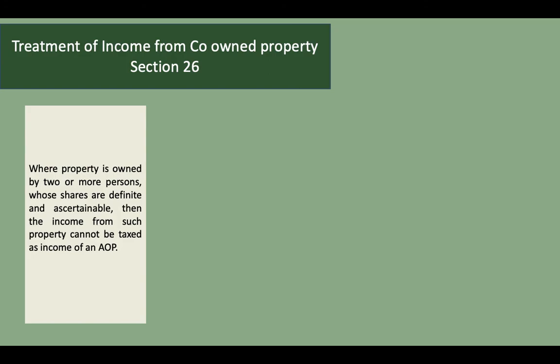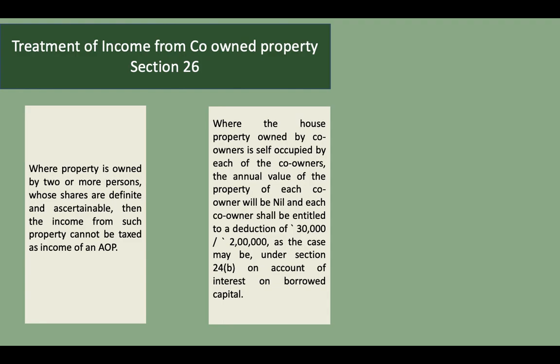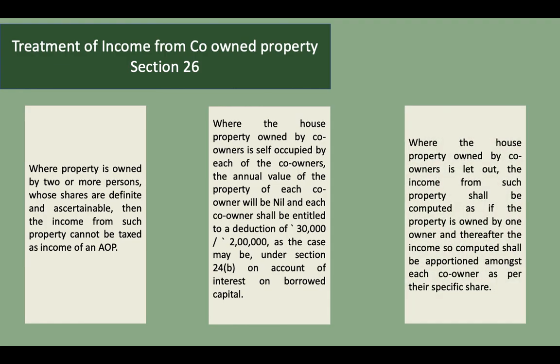Treatment of income of co-owned house property under Section 26: if the property is owned by two or more persons whose shares are definite and ascertainable, the income from such property cannot be taxed under income of an association of persons. Where the house property owned by co-owners is self-occupied, each co-owner is eligible for deduction under Section 24(b) for interest on money borrowed. Where the house property owned by co-owners is let out, income shall be computed as if owned by one single person, and after computing total income from the let-out property, the share is divided among the co-owners.